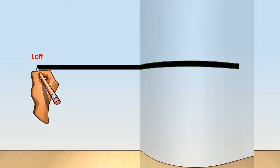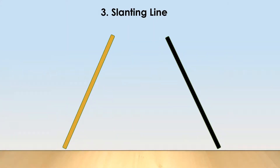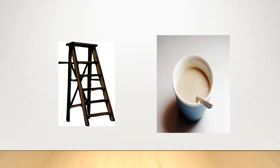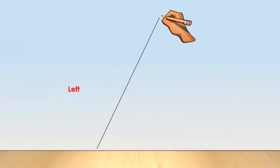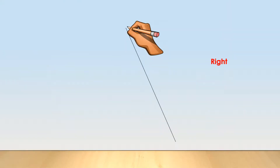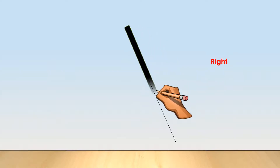The third shape is a slanting line. These two are slanting lines. In the given pictures, this ladder and the spoon both look like slanting lines. This is slanting line to the left, and this is slanting line to the right.